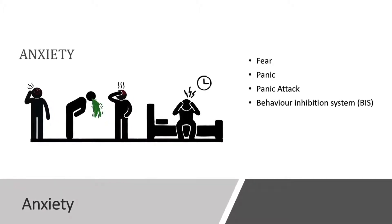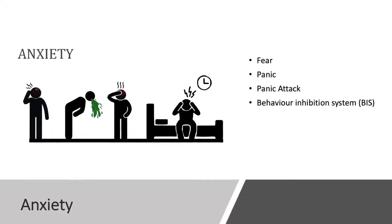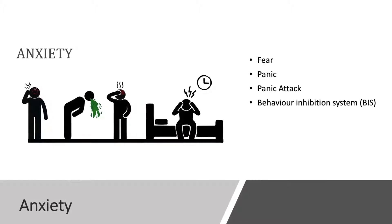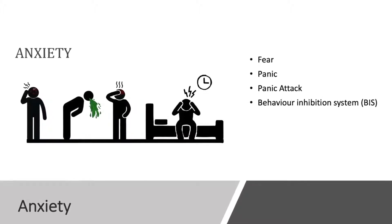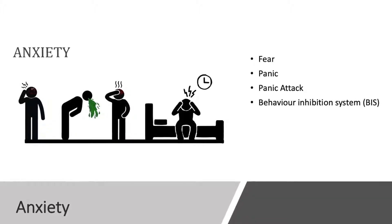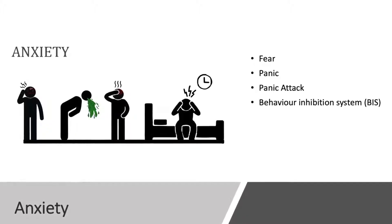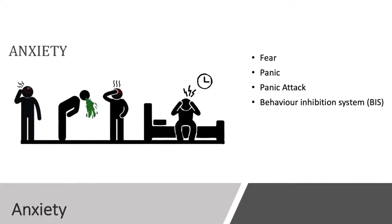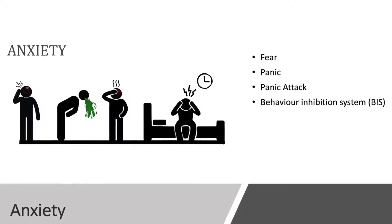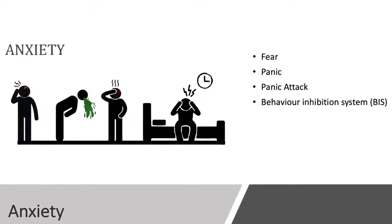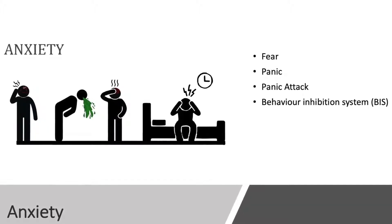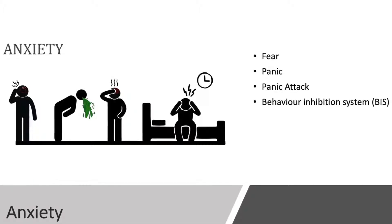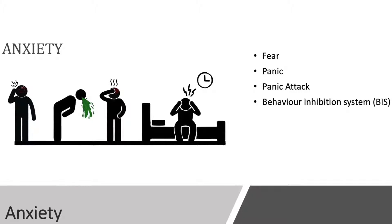A panic attack is an abrupt experience of intense fear or acute discomfort with physical symptoms including heart palpitations, chest pain, shortness of breath, and possible dizziness. Behavior-inhibited systems are signals from the brainstem when reacting to unexpected events. This changes bodily function and signals the possibility of danger occurring. The danger affects the cortex, septal hippocampal system, and the amygdala.